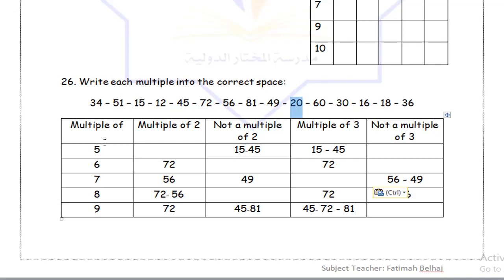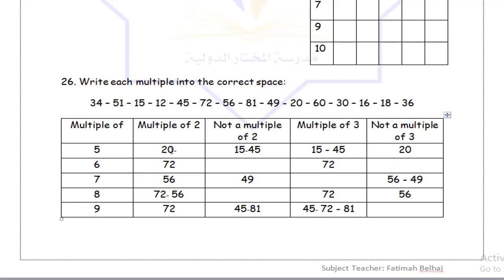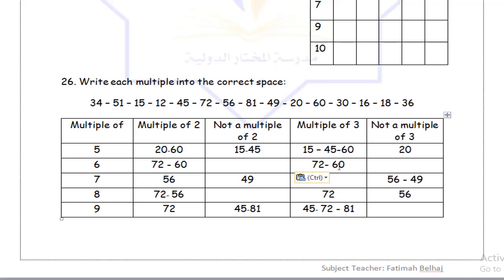Moving on to 20. Is 20 a multiple of 5? Yes. Is it even? Yes, so it's a multiple of 2 as well. Is it a multiple of 3? No, it's not within times table 3. Is it a multiple of 6, 7, 8, or 9? No. Moving on to 60 — is it a multiple of 5? Yes, and it's even, so I'll copy it. Is it a multiple of 3? Yes. Is it a multiple of 6? Yes, and it's a multiple of 2 and 3 at the same time. Is 60 a multiple of 7, 8, or 9? No.